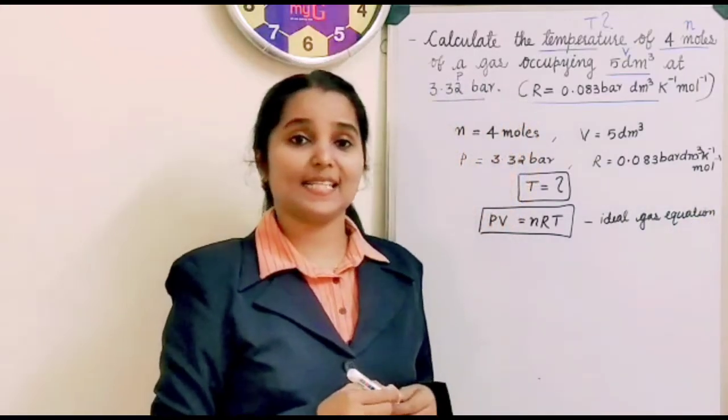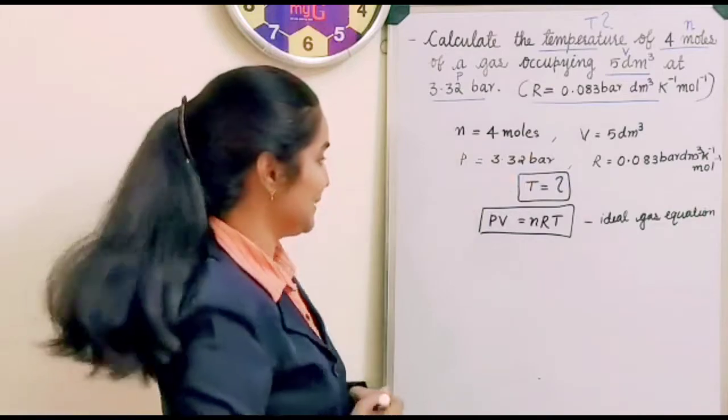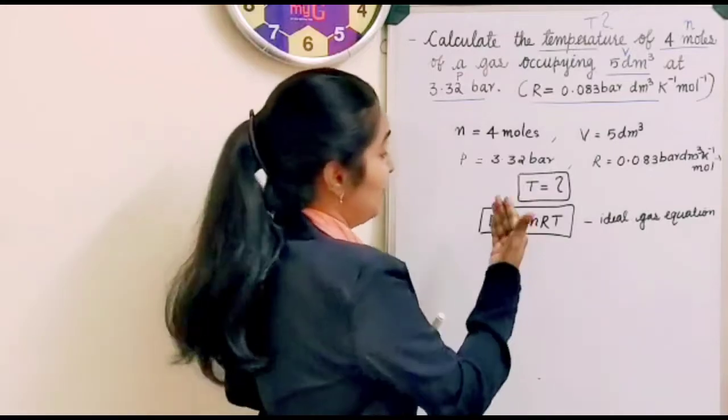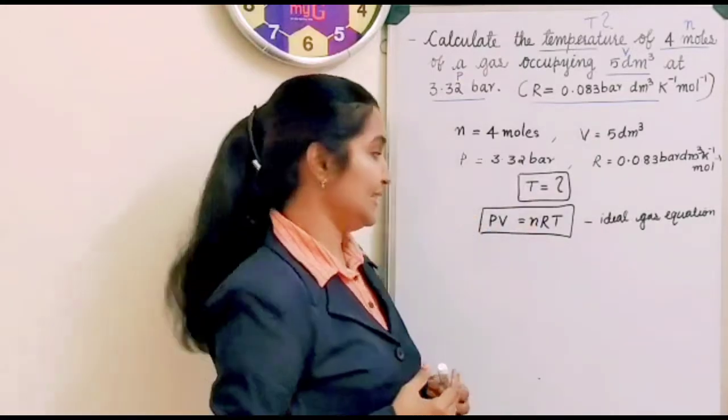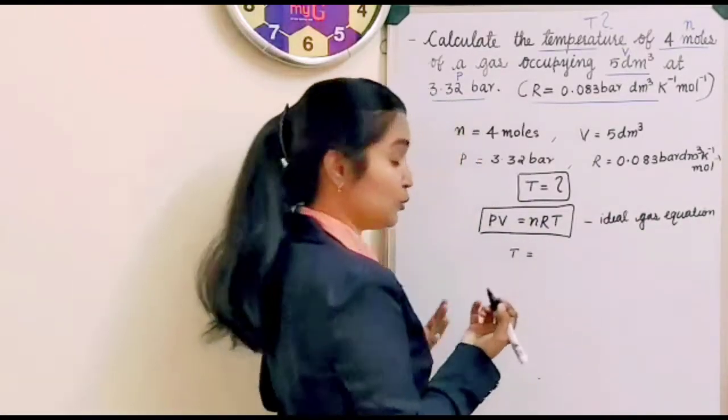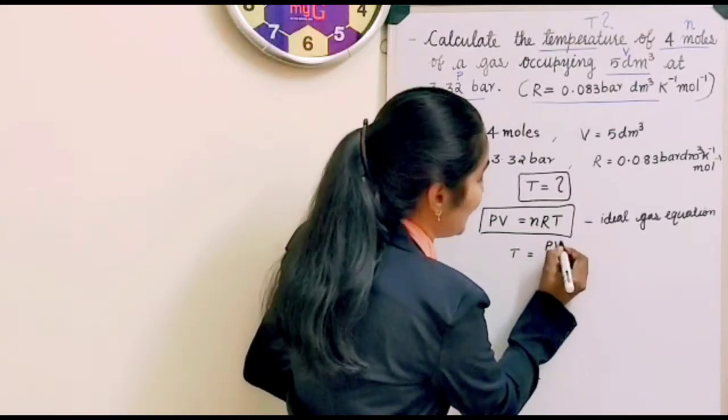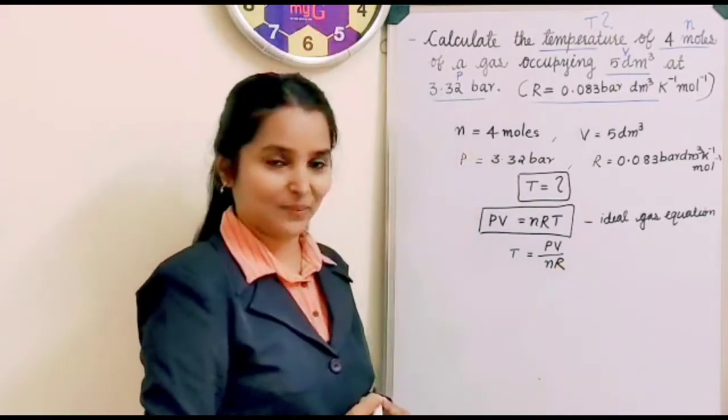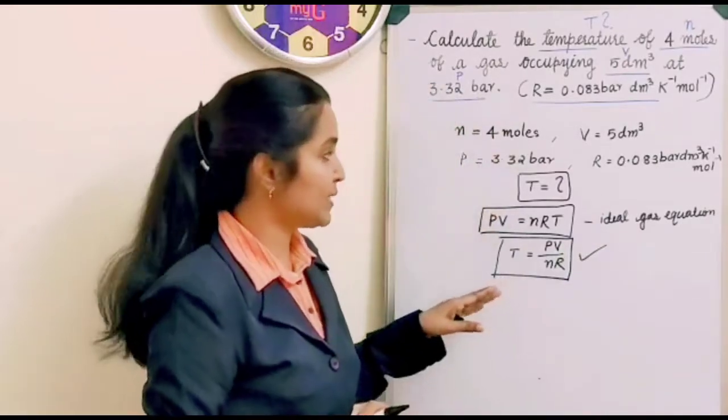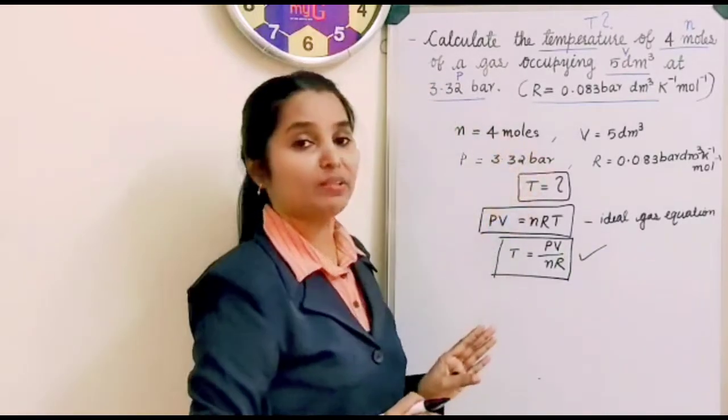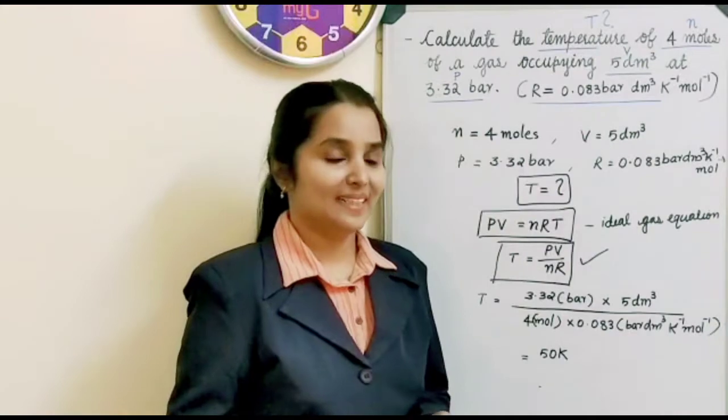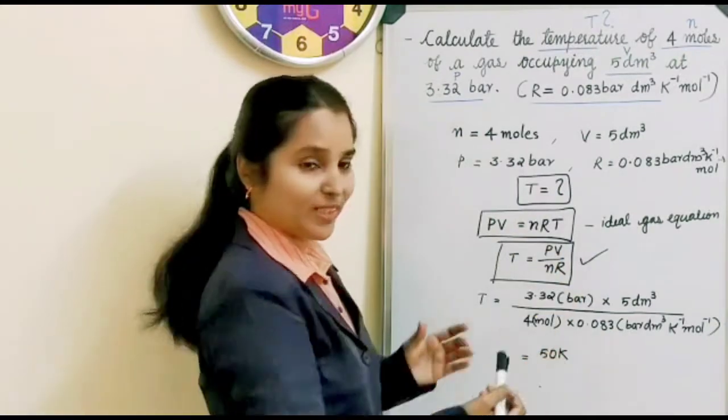So by using ideal gas equation we can solve this problem very easily. Just introduce the values. Just apply these values into this given equation we will get. If PV is equal to nRT, then what can be T? So it's easily very simple way we can find out T from this. T is equal to PV by nR. So we got an equation to find out the temperature. So we will use this equation to find out the temperature by using the given values. Let's substitute those values into this given equation. Let's apply the given values into the equation.